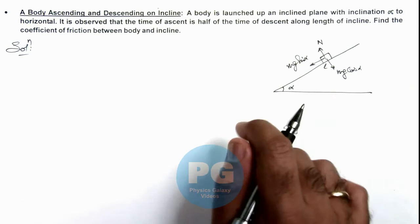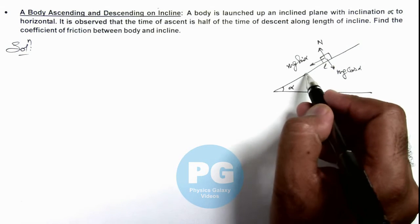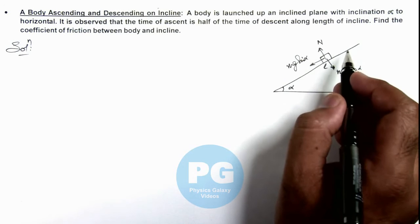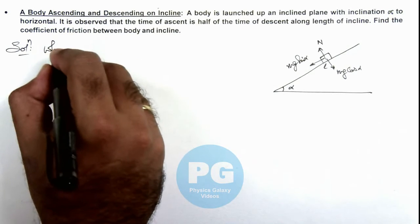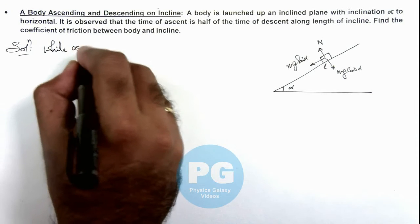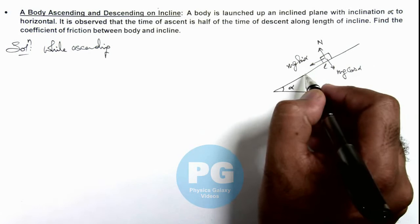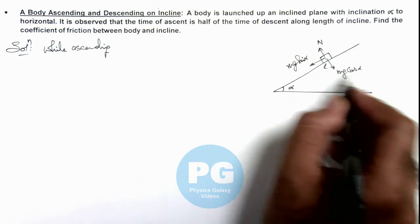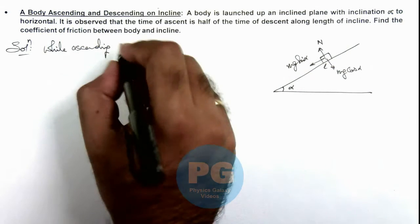Here we can see when the body goes up, then in the ascent part its friction will be in downward direction, and when it comes down the friction will act in upward direction. So here we can write while ascending, when it is going up, the friction will act in downward direction, and this mg sine alpha and friction which is mu mg cos alpha both will oppose its motion. So we can write while ascending.